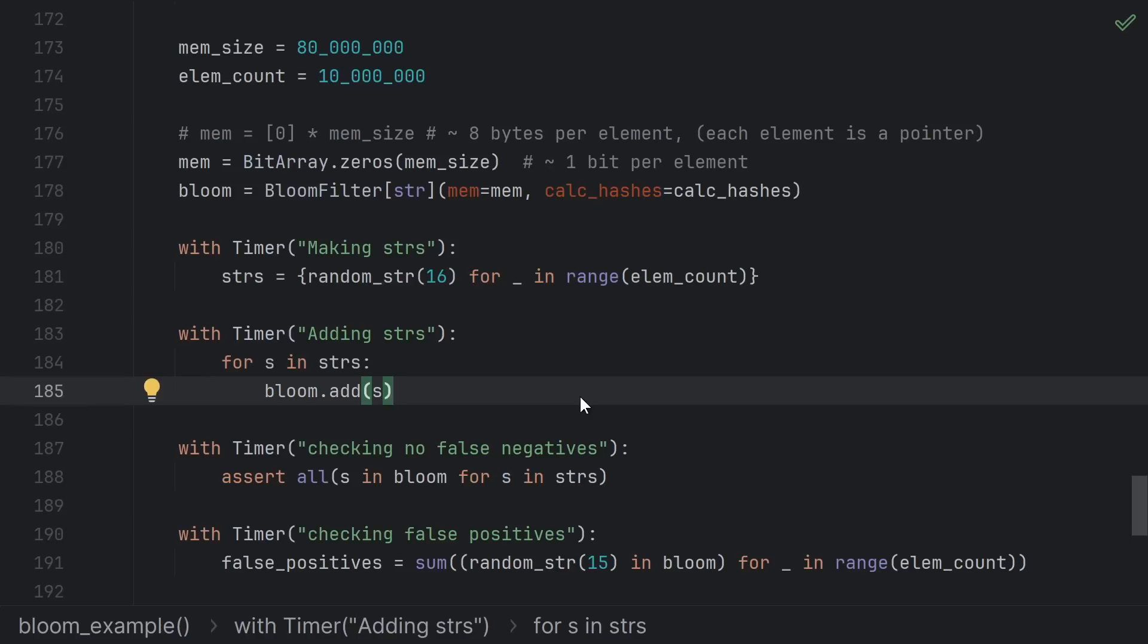We create 10 million random length 16 strings and add them to the bloom filter. Note that we're using a huge amount of memory here because we continue to store the strings in memory. For the malicious link detection use case, we could add all the links to the bloom filter and then serialize just the bloom filter to distribute to our servers. The servers don't need to keep all the individual links, so they would only need that extra 10 megabytes of memory for the bloom filter, not gigabytes for all the strings.